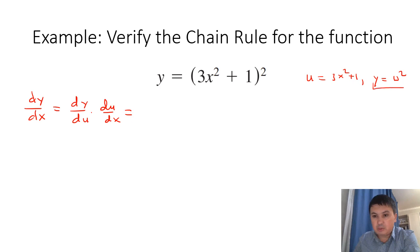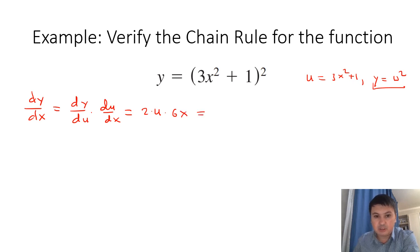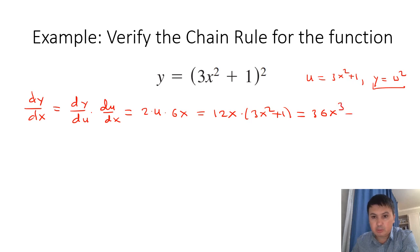Since y = u², the derivative of y with respect to u is 2u, and du/dx, where u = 3x² + 1, gives 6x. So this is 2u · 6x = 12x · u = 12x(3x² + 1). If you expand it, it becomes 36x³ + 12x. So that's the result by the chain rule.